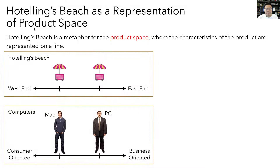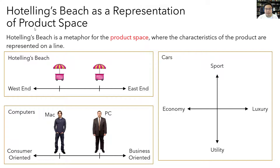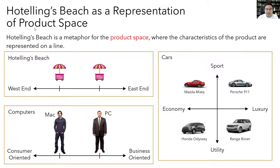Products don't have to be represented by just a line — they can be represented in two-dimensional space as well. For example, cars might be differentiated by the quality of their build and components, so whether they're luxury or economy cars, as well as their purpose — whether they're for sport or for utility. The Mazda Miata is on the economy end of sports cars, while the Porsche 911 is on the luxury end. As for utility vehicles, the Honda Odyssey would be on the economy end, and the Range Rover on the luxury end. For real products that are even more complicated, we can represent all of their characteristics on an n-dimensional space.